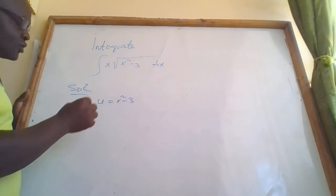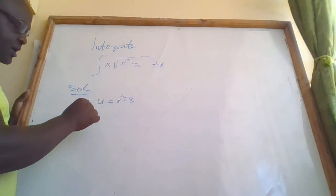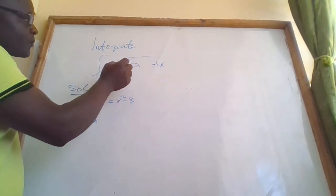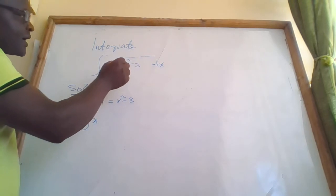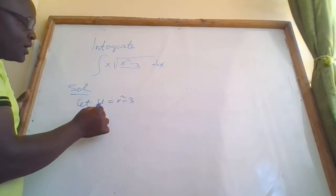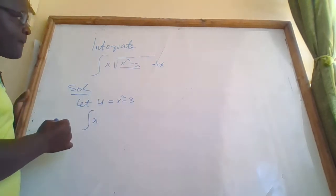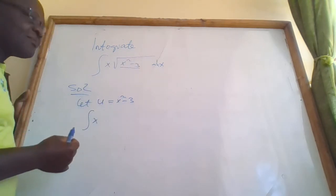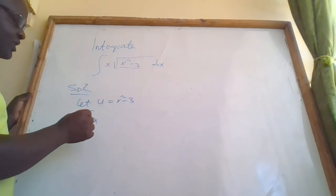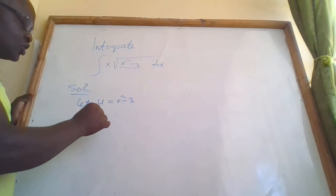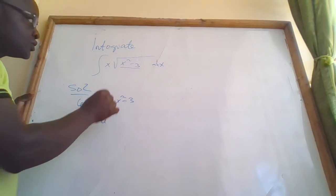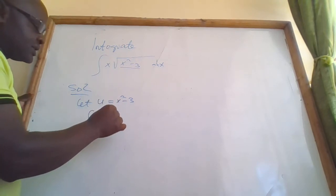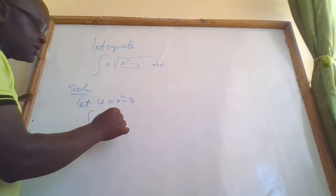Therefore our integral will become the integral of x times u — where the square root symbol is the same as raised to a half — so we shall have x times u raised to one half, then dx.